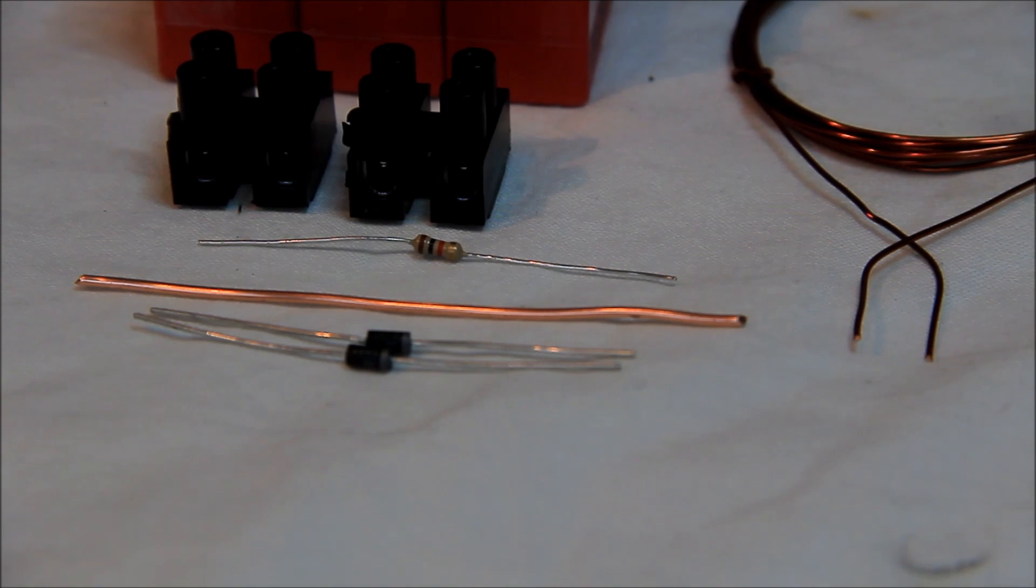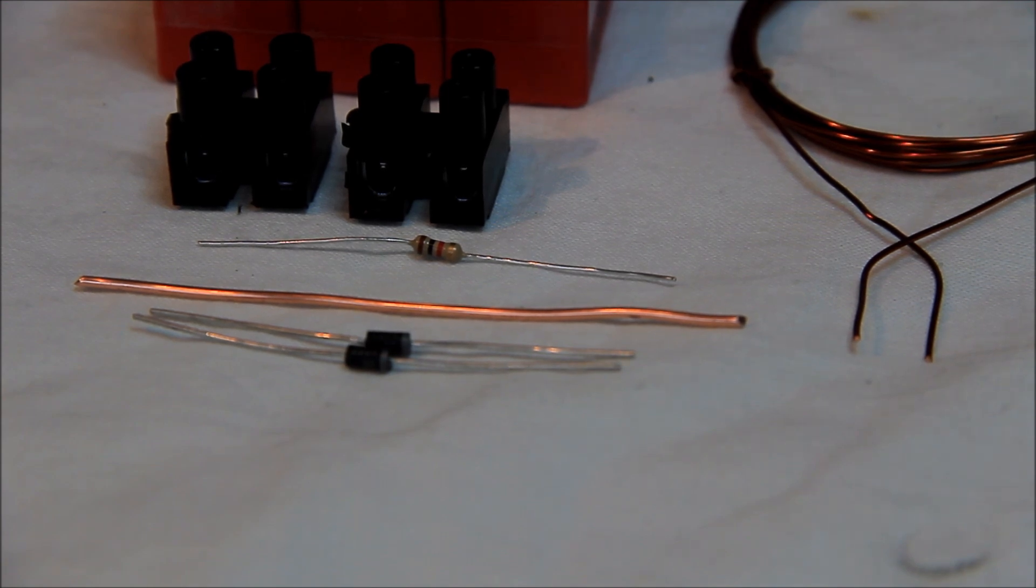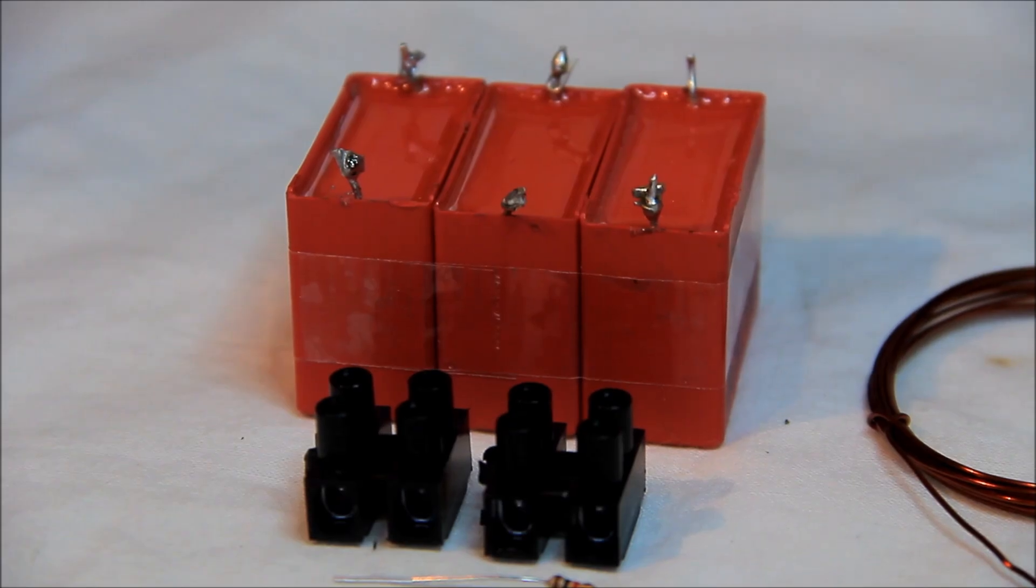Then you need two 1N4007 diodes, a big copper wire, a resistor with one kilo-ohm, two clamps, and in the background you can see a capacitor, a big capacitor like this.